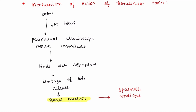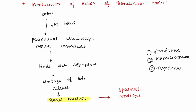Because this toxin produces flaccid paralysis, it is therapeutically used in cases where the patient is suffering from spasmodic conditions. These conditions include: first, strabismus — which means squinting of eyes; second, blepharospasm — which means involuntary twitching of the eye; and third, myoclonus — which means muscle jerks.